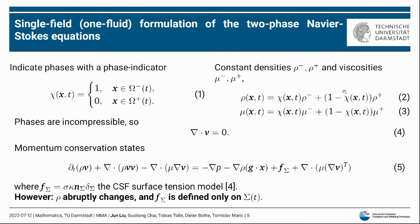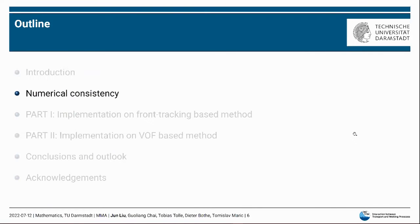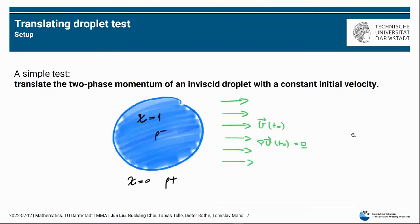The single-field formulation of Navier-Stokes equations is normally used to model the incompressible two-phase flow. The phase indicator chi indicates two phases by two values, so the density and viscosity have a uniform form. Since the phases are incompressible, we have the divergence-free velocity field. Then we have the single-field formulation of the momentum conservation equation.